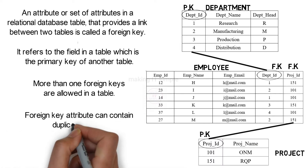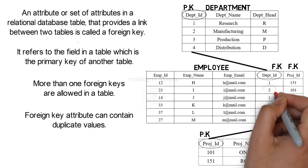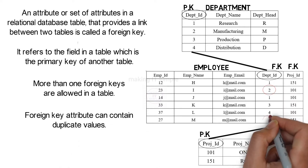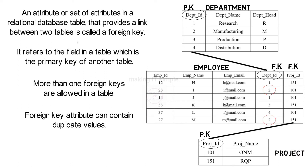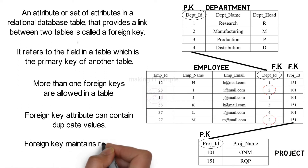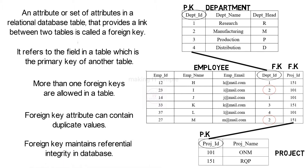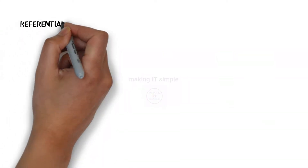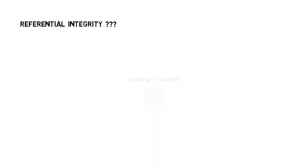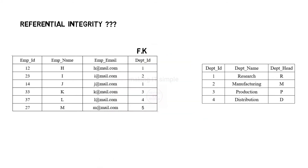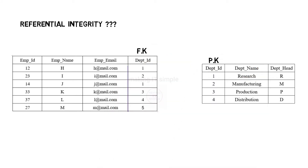Foreign key attributes can contain duplicate values. Like in our example, two employees may work in the same department, so the foreign key will have duplicate values present. Foreign key maintains referential integrity in a database — this is a very important point in the foreign key concept. Let us understand what referential integrity is.